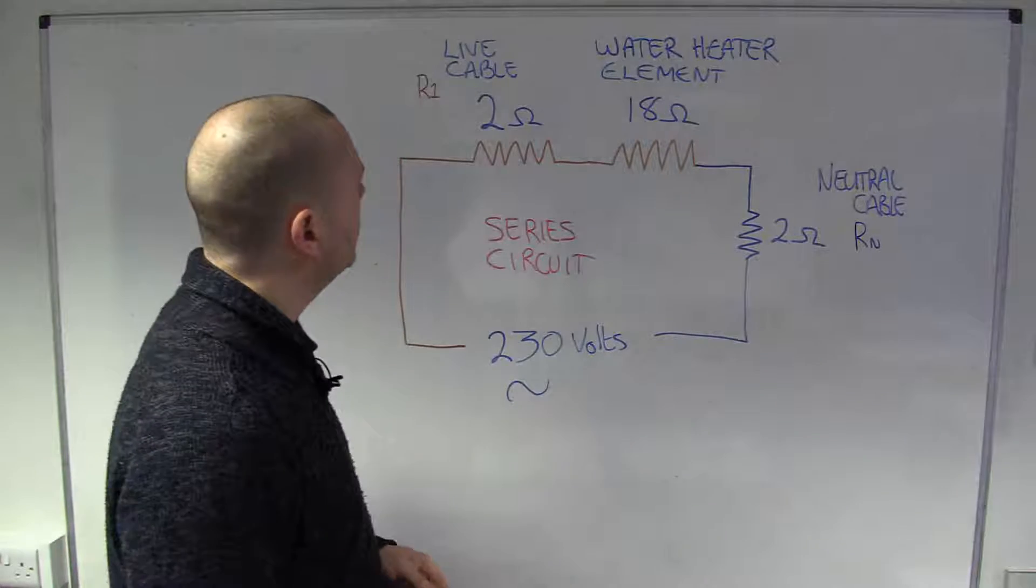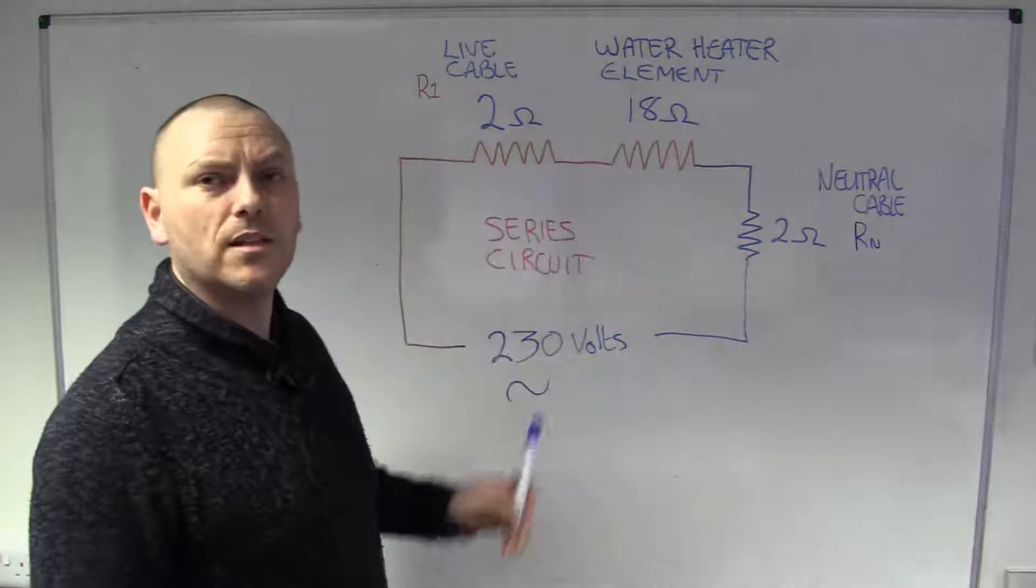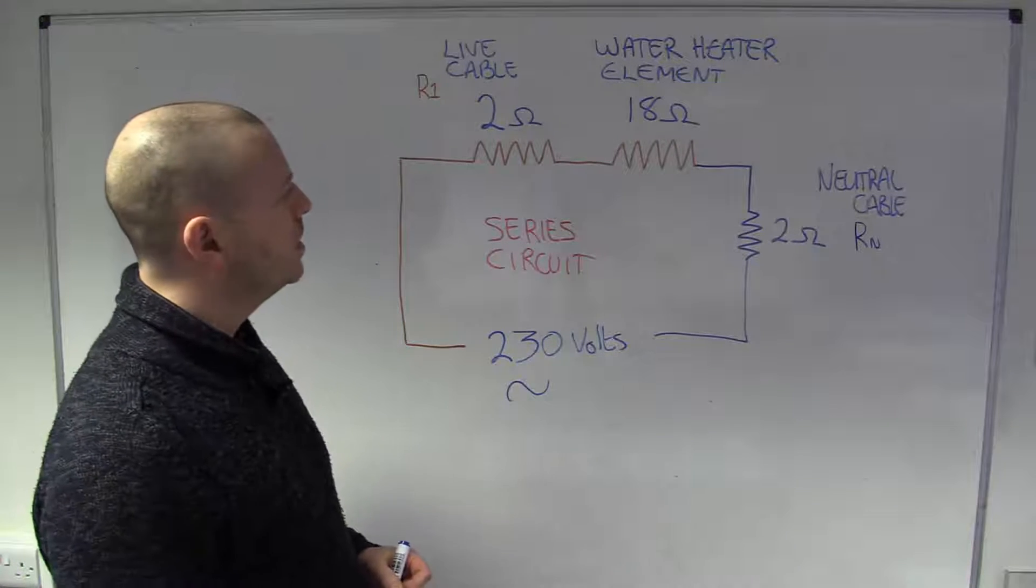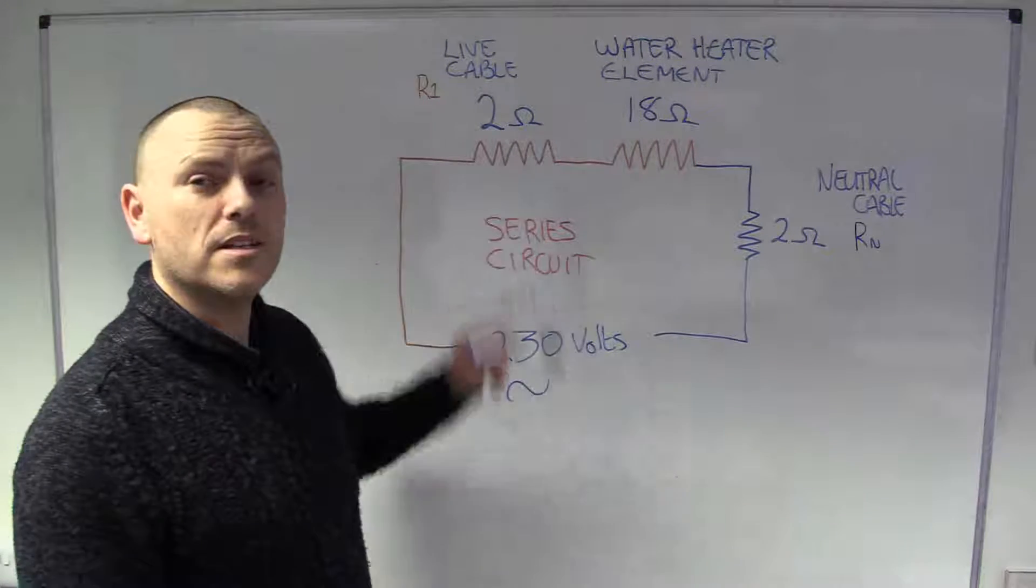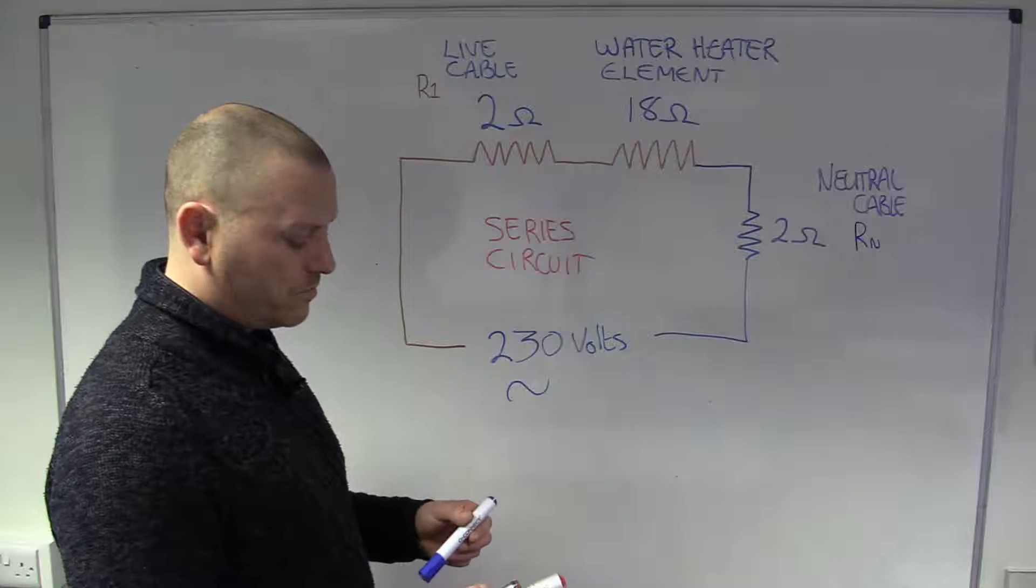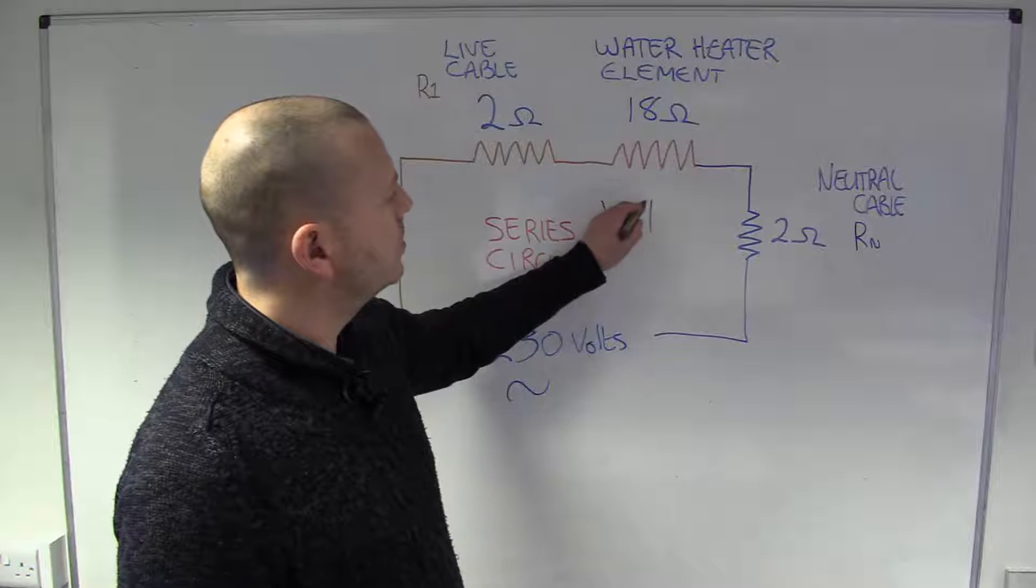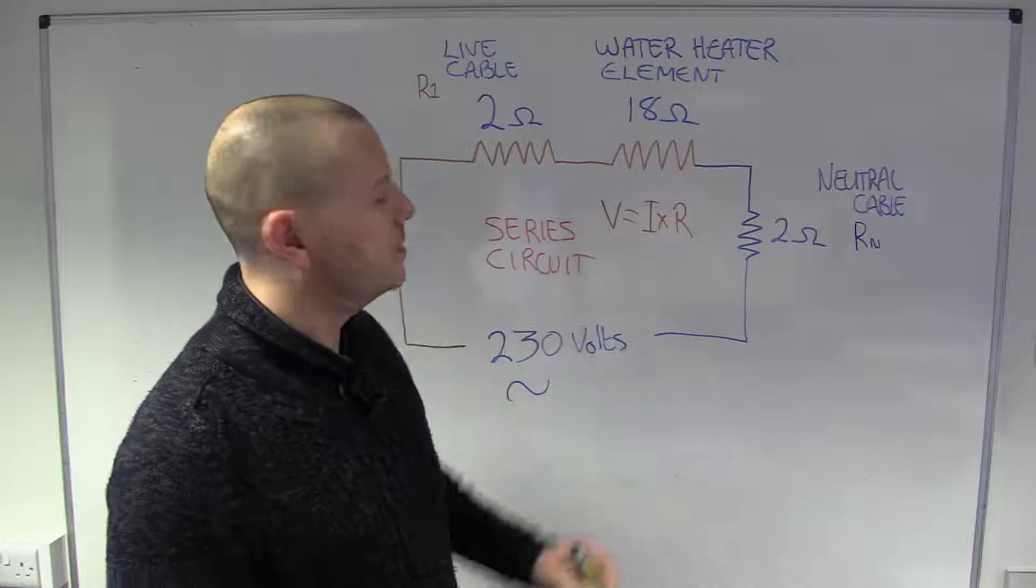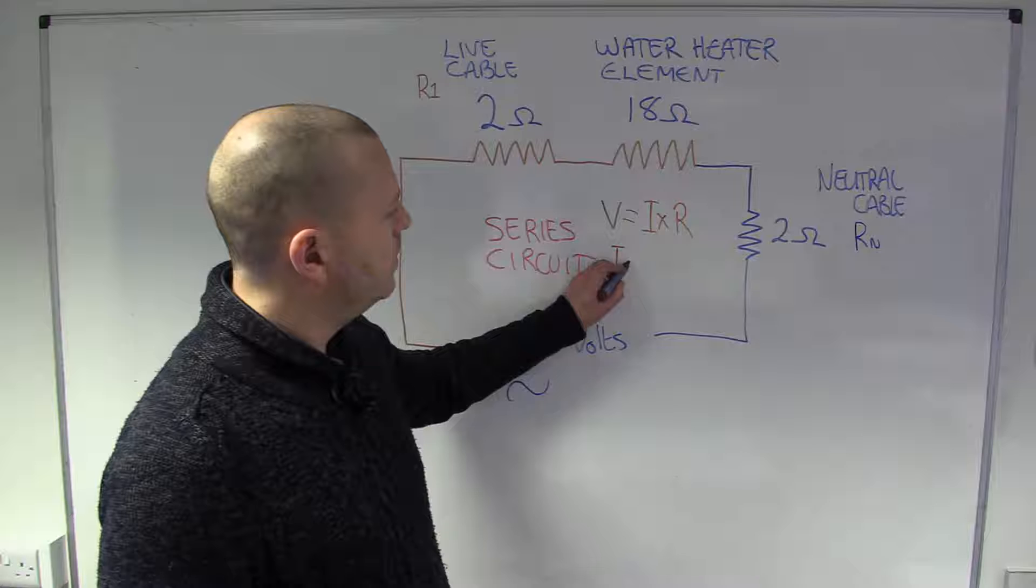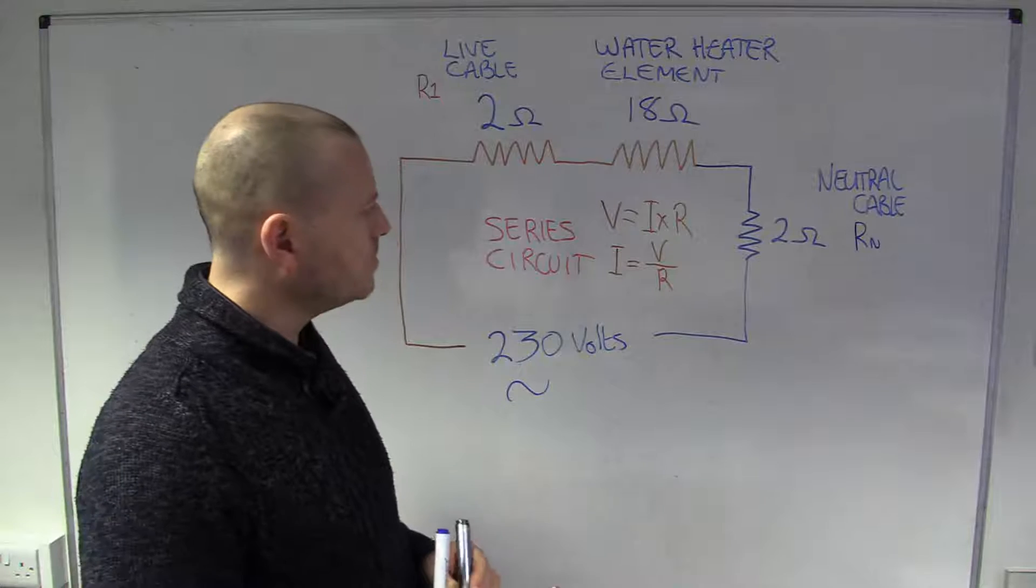So, where do we start? Well, the first thing we'd want to know in this circuit is how much current is going to flow when we connect this circuit up to a source of 230 volts. Depending on the voltage, depending on the resistance, that current flow is going to change. And it's going to change because of Ohm's Law. Let's just remind you what Ohm's Law is. Our voltage is equal to our current times the resistance in the circuit. Or, current is equal to our voltage divided by our resistance.